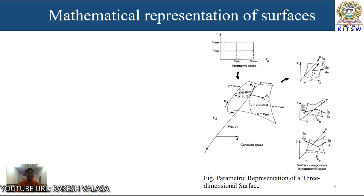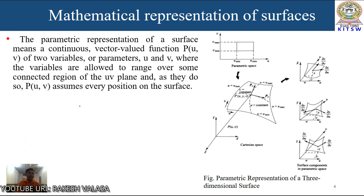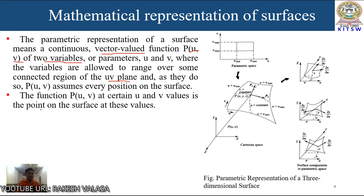Coming to parametric representation of surface: the parametric representation of a surface means it is a continuous vector-valued function, p(u, v), of two variables. Here, u is one variable in the x direction and v is the another variable in the y direction. The variables are allowed to range over some connected region of the uv plane, so p(u, v) assumes every position on the surface. The function p(u, v) at certain u and v values is the point on the surface at these values.